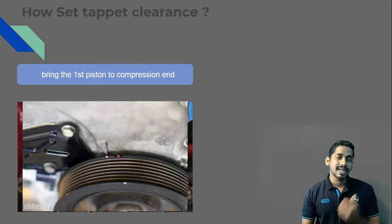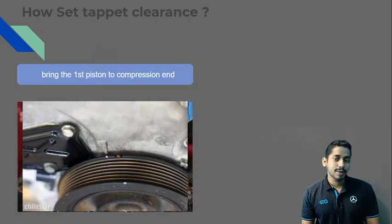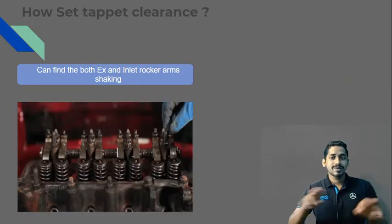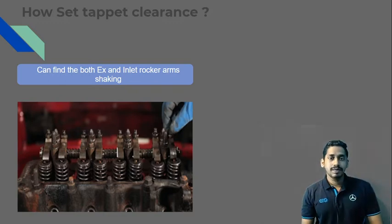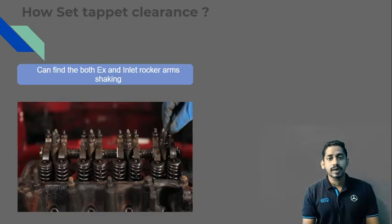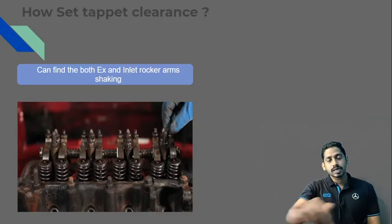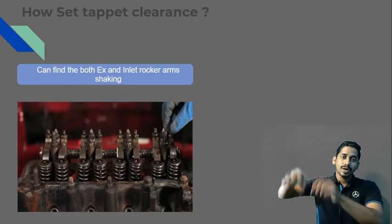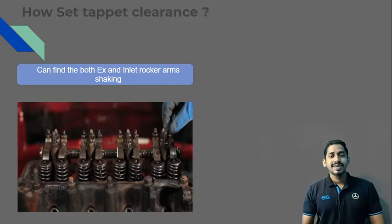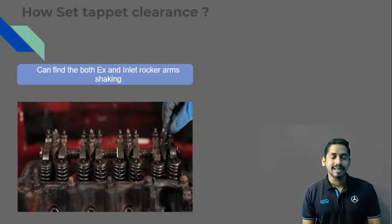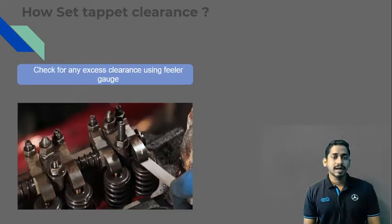So we have to confirm whether we are at the end of exhaust or at the end of compression. We have to check that the valves are in a closed condition so that if you are measuring the valve clearance, it will be clear. If it is in the exhaust stroke, at the end of exhaust, the exhaust valve is in open condition — that is why you can't measure the clearance correctly.